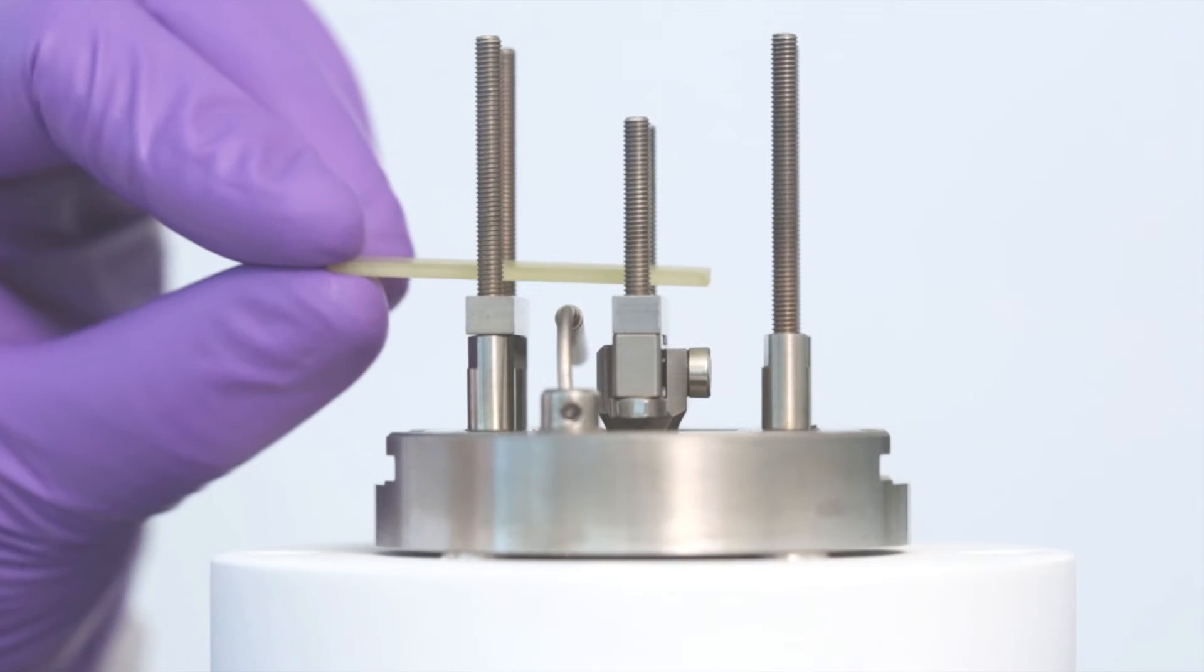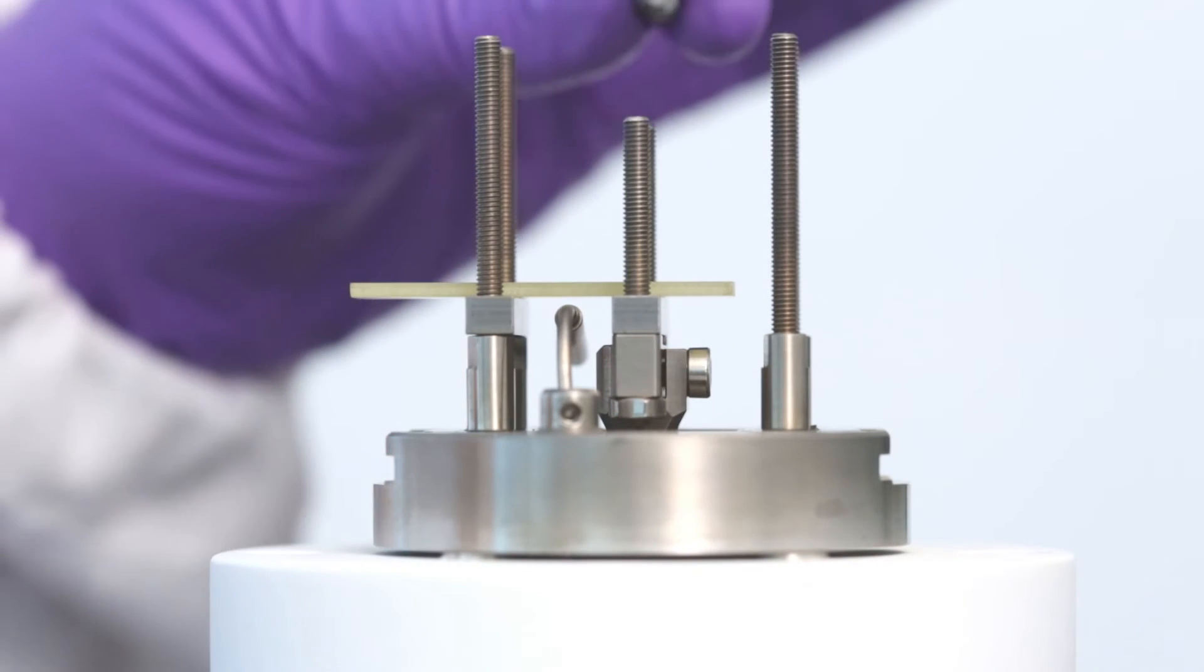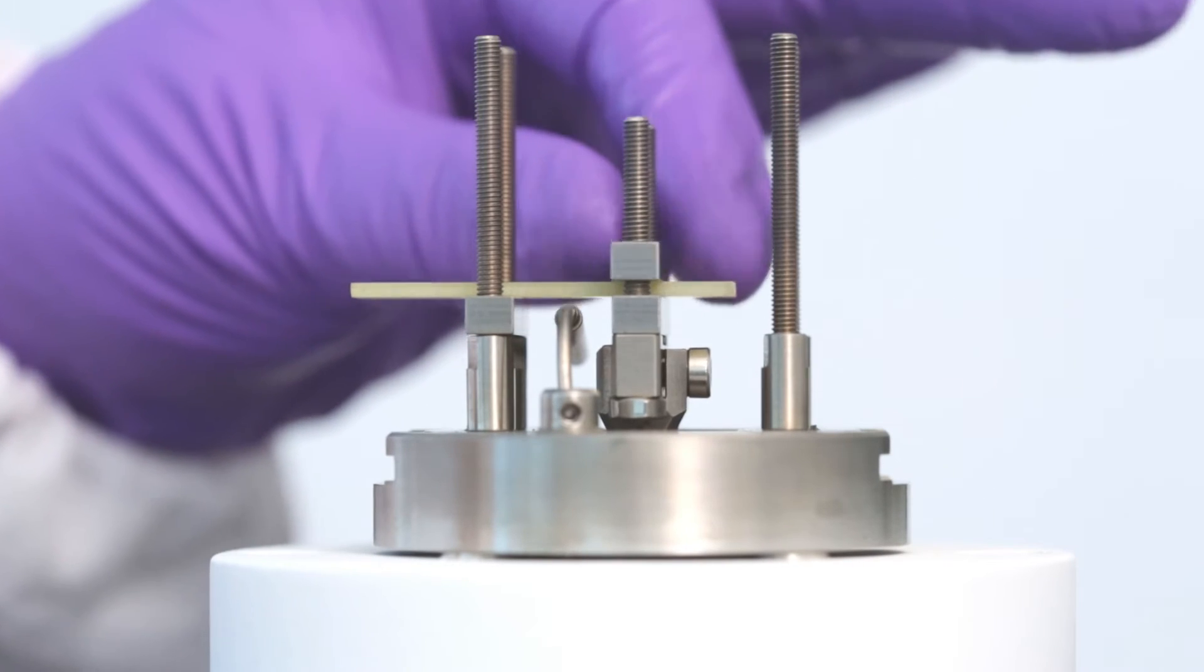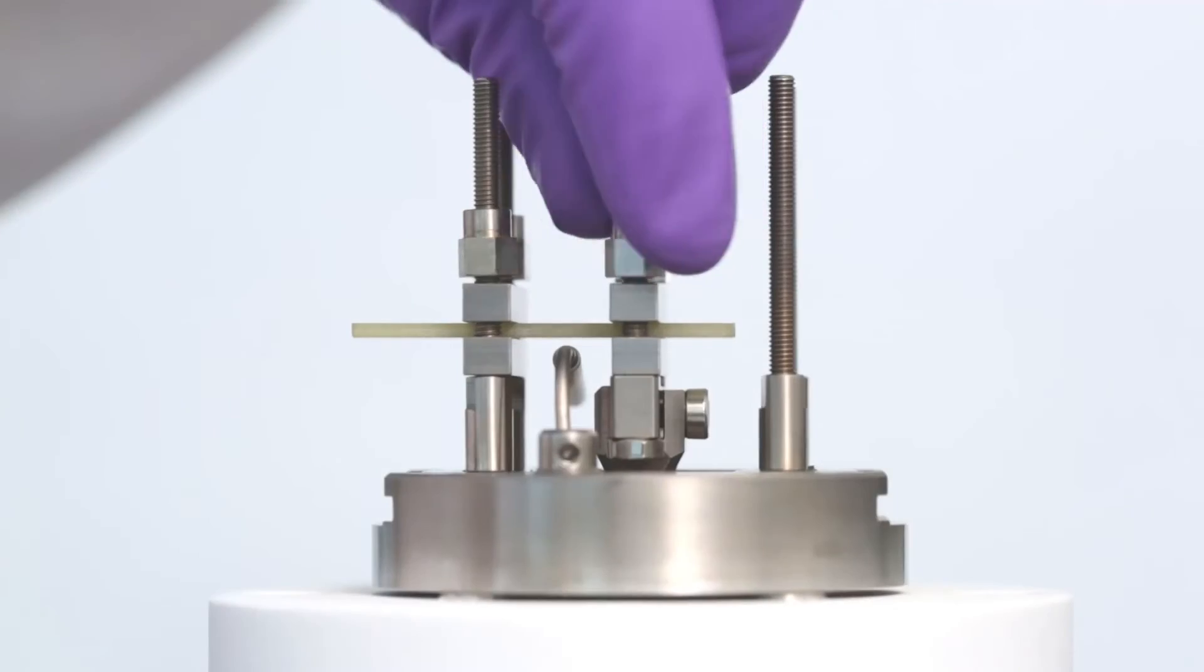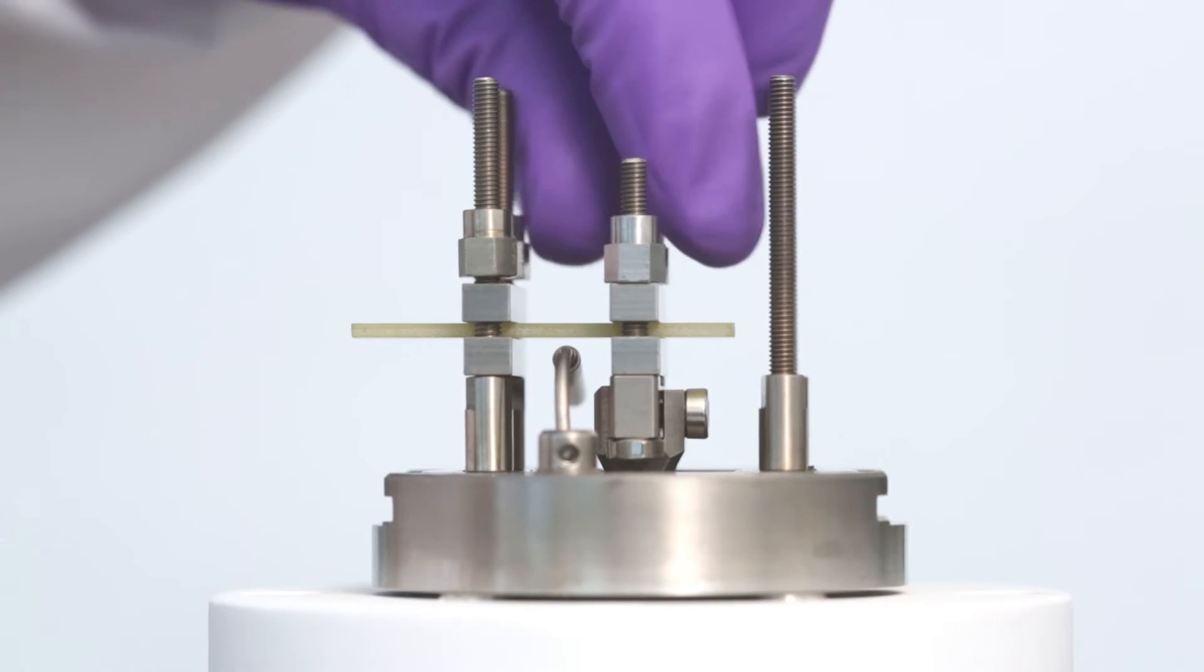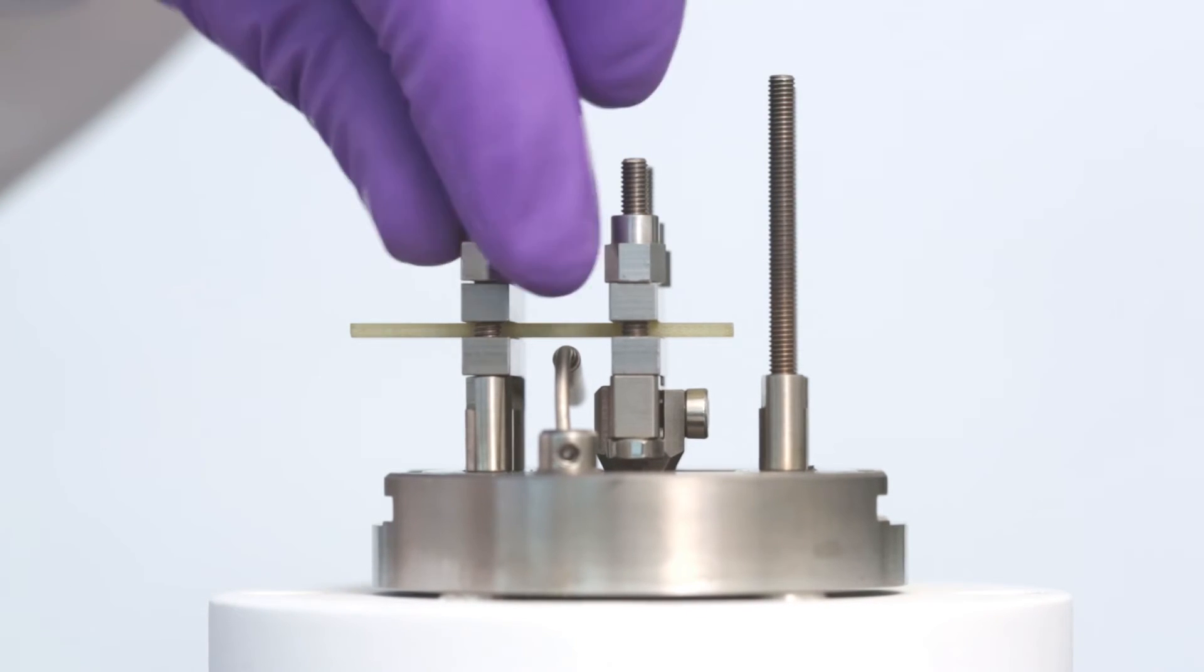Following this, we then place the sample on the clamp bars. Now, we can fit the upper two clamp bars. Screw on the four extended nuts and tighten equally so they are just finger tight.